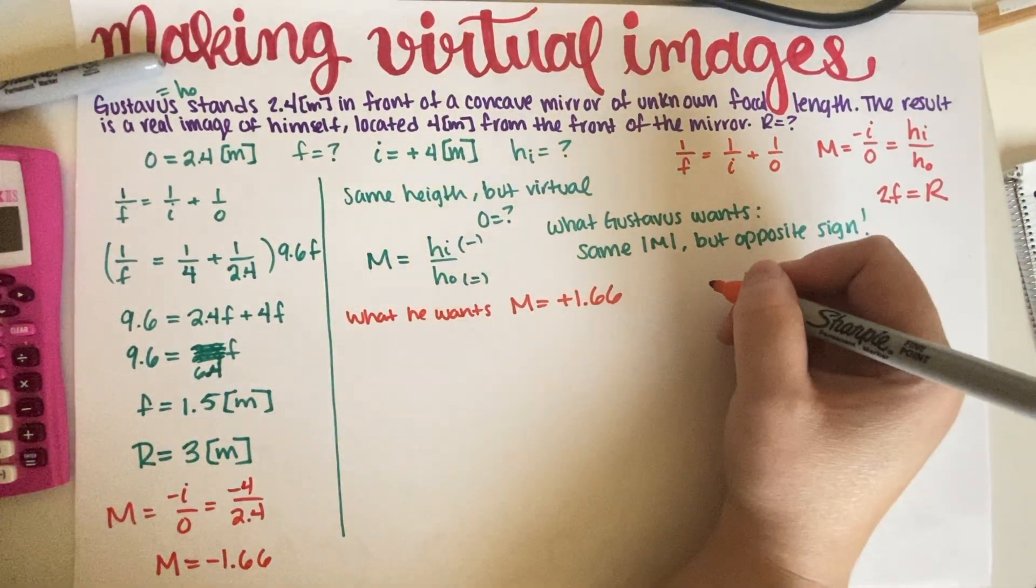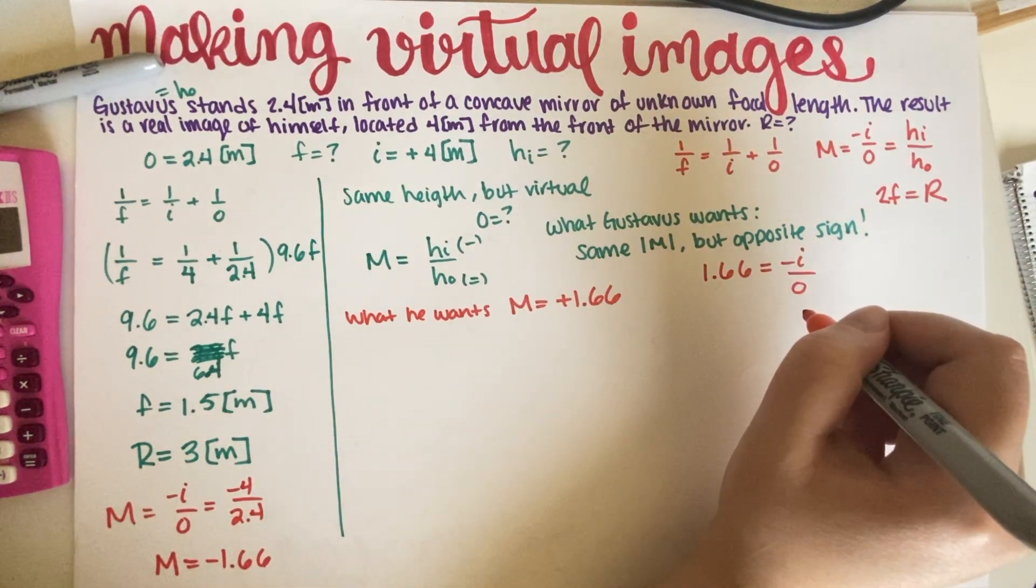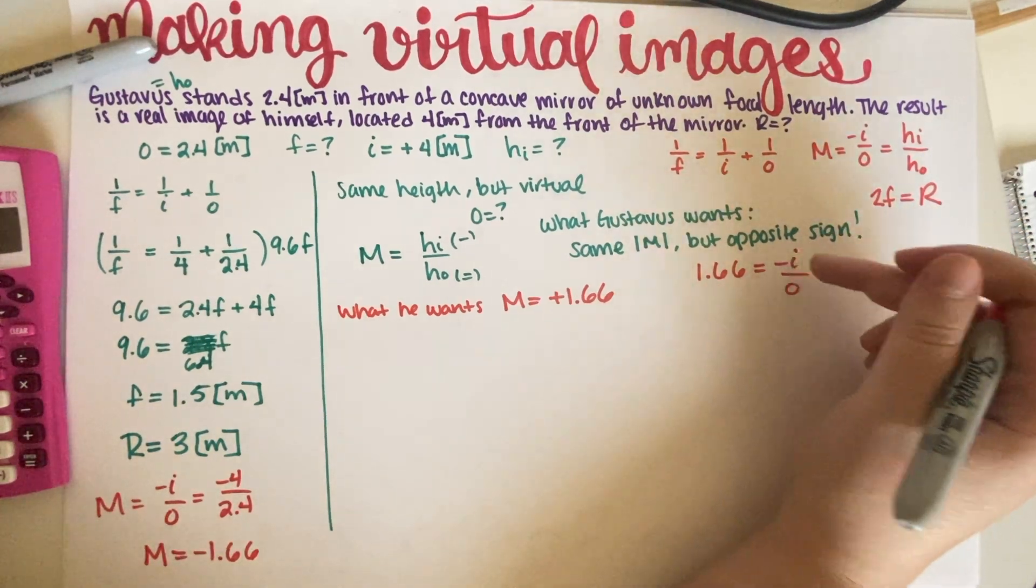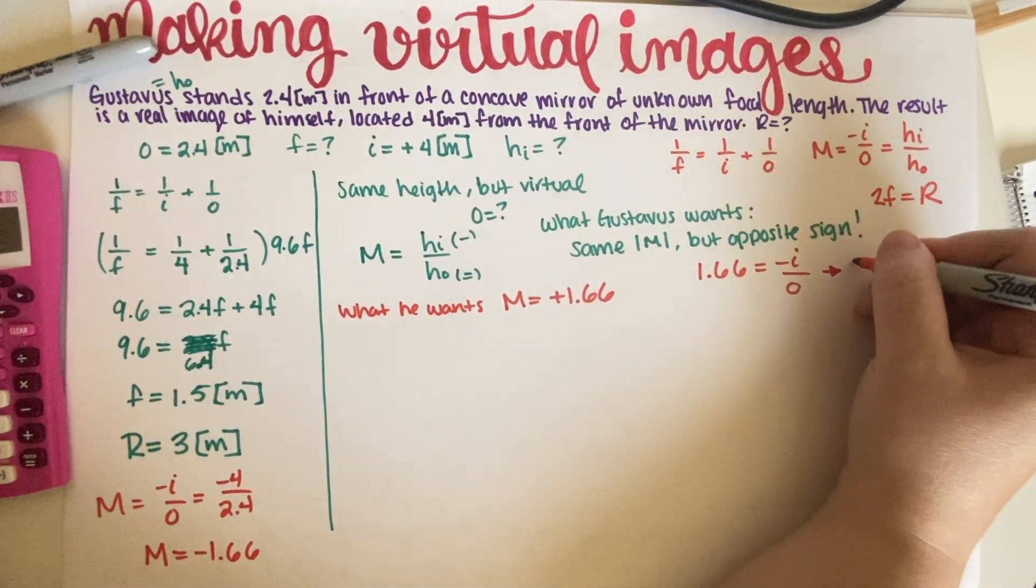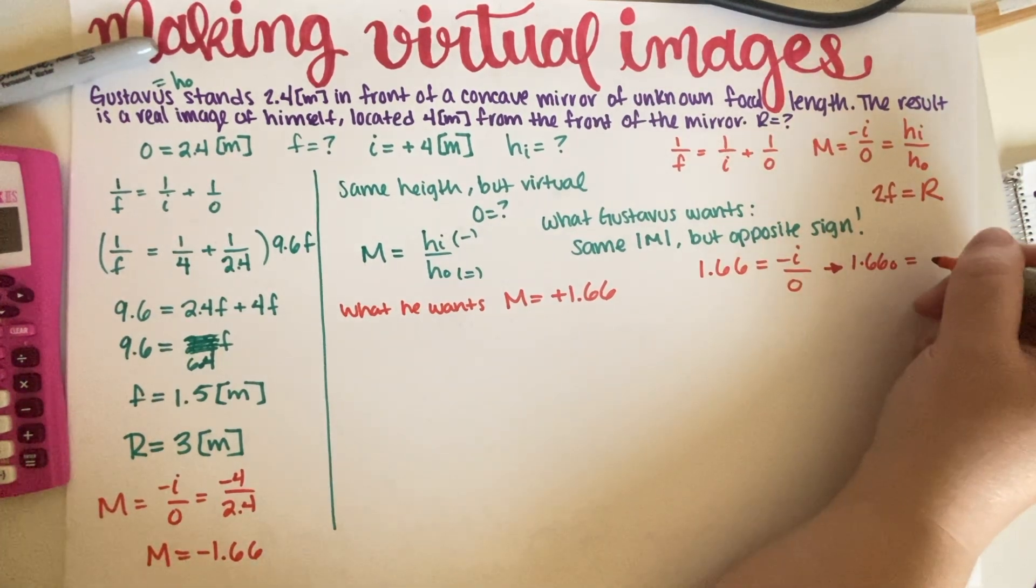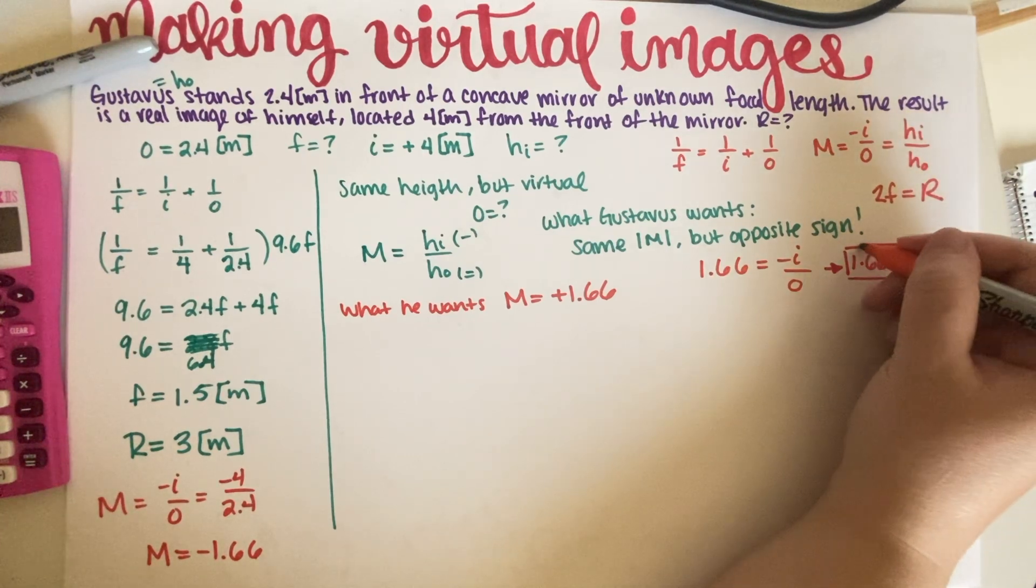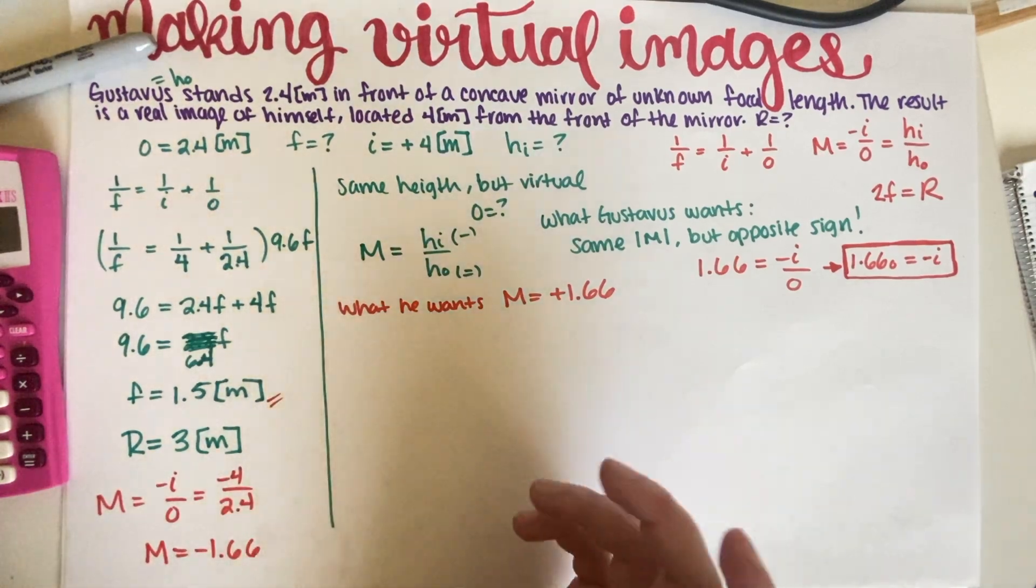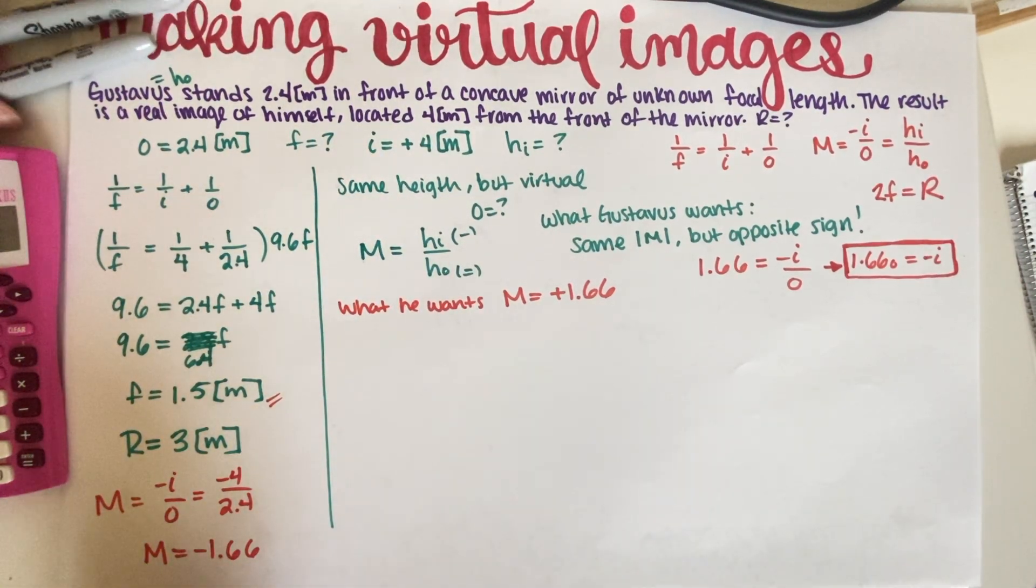So this 1.66 is equal to negative I over O, like this. And this basically gives us an equation, right? We can't really do anything about it because we don't have, you know, we're looking for O, but we don't have I either. So we're just going to have to suck it up and have it as an equation. And then what I'm thinking we can do is use our other equation over here. And if we combine them because we do know F and F is going to stay the same because it's the same mirror. So I'm thinking let's just use this other equation. And that way we are going to be able to figure it out. I'm pretty sure. So let's just go ahead and do that.